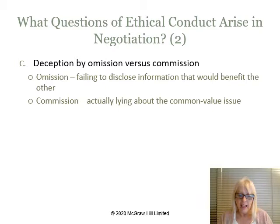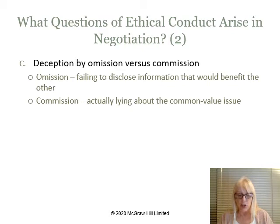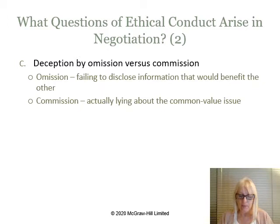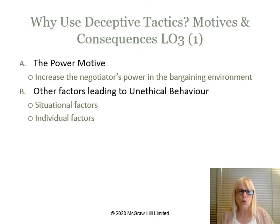The deception of omission versus commission. The use of deceptive tactics can be passive or active. There are two forms of deception. First, misrepresentation by omission — failing to disclose information that would benefit the other party. And misrepresentation by commission — actually lying about the common value issue. Studies indicate people are more willing to lie by omission. This reinforces the norm of caveat emptor, or buyer beware, and the onus on negotiating parties to ask pertinent questions to probe for any potential deception by omission.